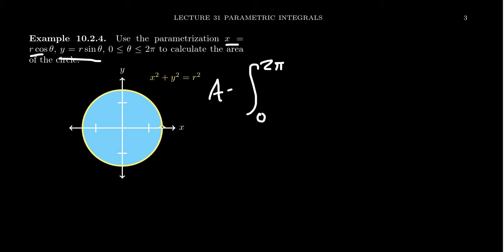But y, we would replace with the y function, which is r sine theta. And then the derivative of x, we're going to get r, well, negative r sine theta d theta, like so. So we can pull out the negative r squared, so we have to integrate sine squared theta d theta.